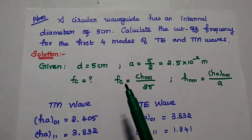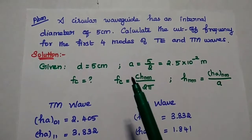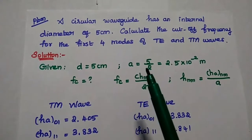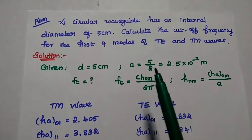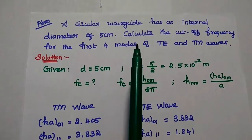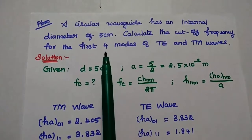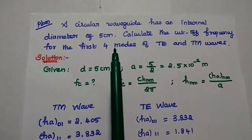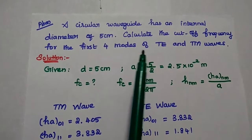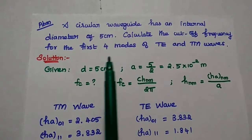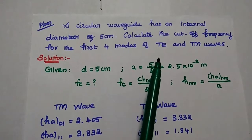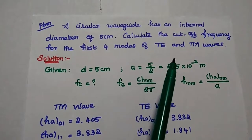Dear students, now we are going to solve important problems in circular waveguide. A circular waveguide has an internal diameter of 5 cm. Calculate the cutoff frequency for the first 4 modes of TE and TM waves.